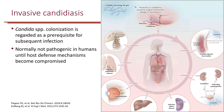Now let's look at invasive candidiasis. Candida colonization is regarded as a prerequisite for subsequent infection — typically through the intestines. People can be colonized in the intestines with candida species as part of the flora. If somebody has peritonitis, for example from colon surgery, this can cause leakage and these candida can find their way into the bloodstream and cause candidemia. Another path could be if somebody has a long-term catheter — candida species colonized on the skin can find their way into the blood and cause candidemia.